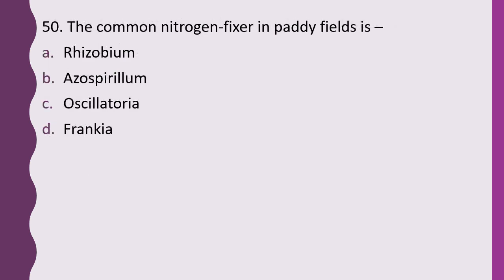Question 50. The common nitrogen fixer in paddy fields is: Rhizobium, Azospirillum, Oscillatoria, or Frankia. The correct answer is option C, Oscillatoria.